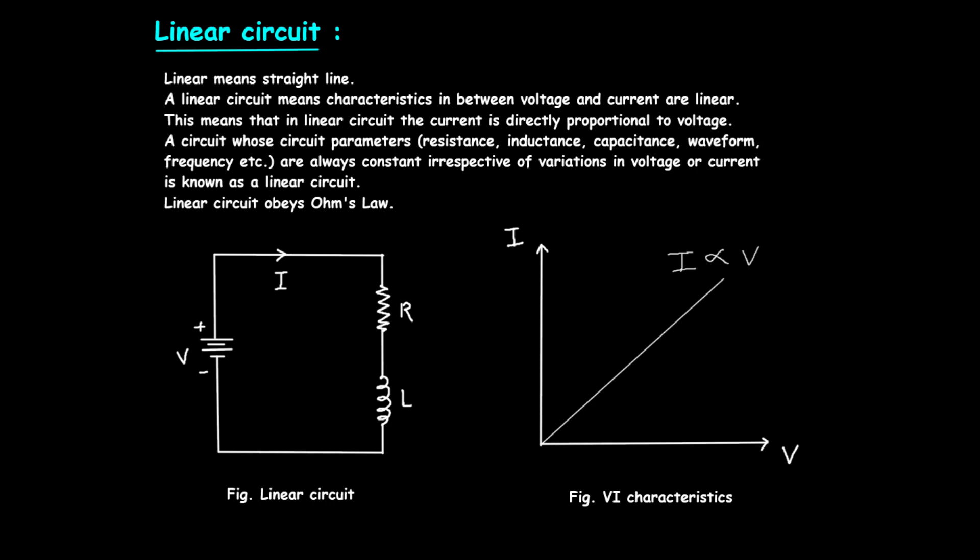Now, let's discuss the key components of a linear circuit. 1. Resistor, R: A resistor opposes the flow of electric current, creating a voltage drop in the process. The resistance value, R, is a constant that determines how much the resistor will resist the current flow. In a linear circuit, this value does not change with variations in voltage or current.